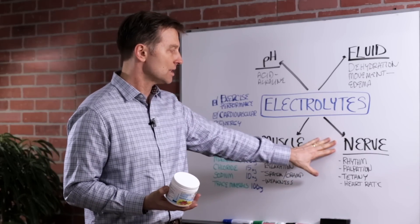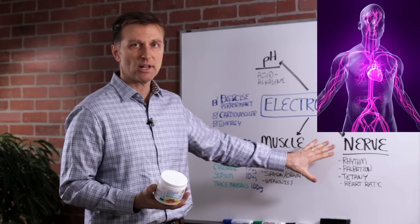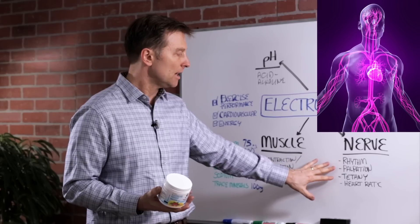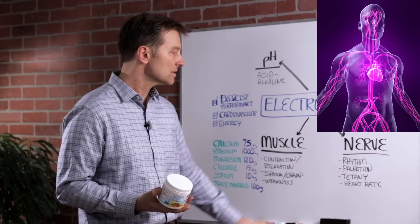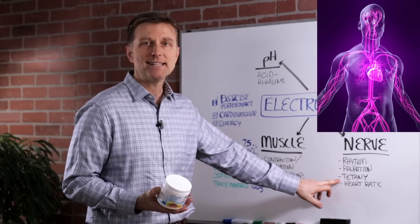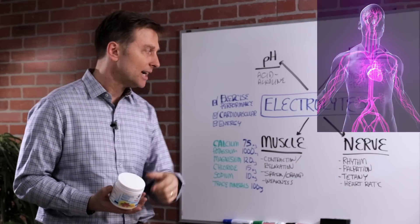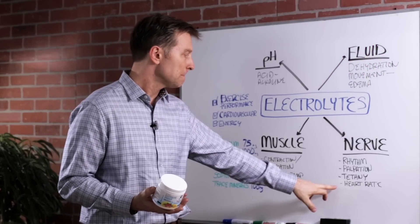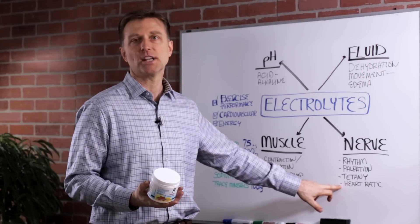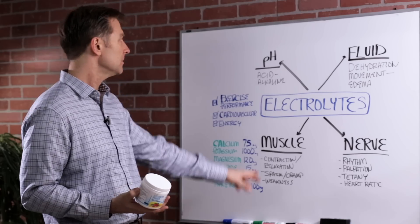It also supports the nervous system. So the nerves need electrolytes for the rhythm, prevent palpitations, prevent tetany. That's that little twitching on the eye or throughout the body. Improve and help balance the heart rate. That's mainly potassium.